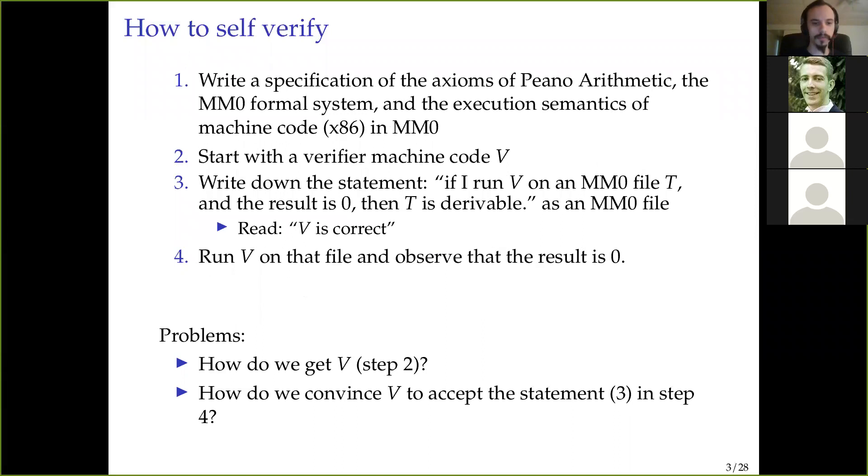Now, there are some problems with this. First of all, how do we get v? How do we get this piece of machine code that's supposed to do the verification? And also, this has to be the same v that is appearing inside the statement v is correct. And then how do we convince v to accept the statement? That is going to somehow require some proof.